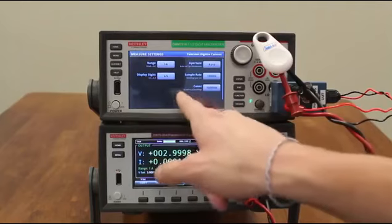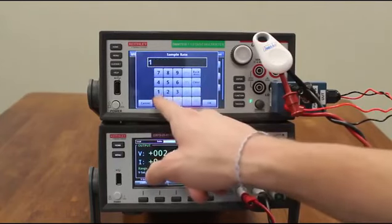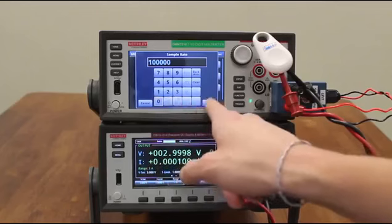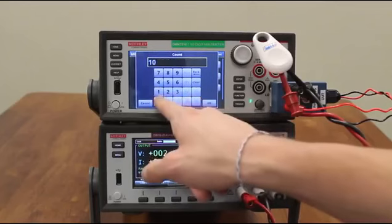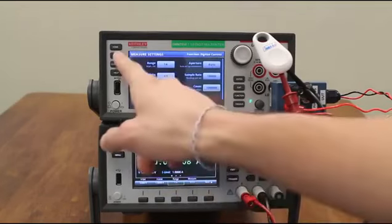We will go to settings, change the sample rate to 100,000, and the count to 1 million. This will give us 10 seconds of data collection.